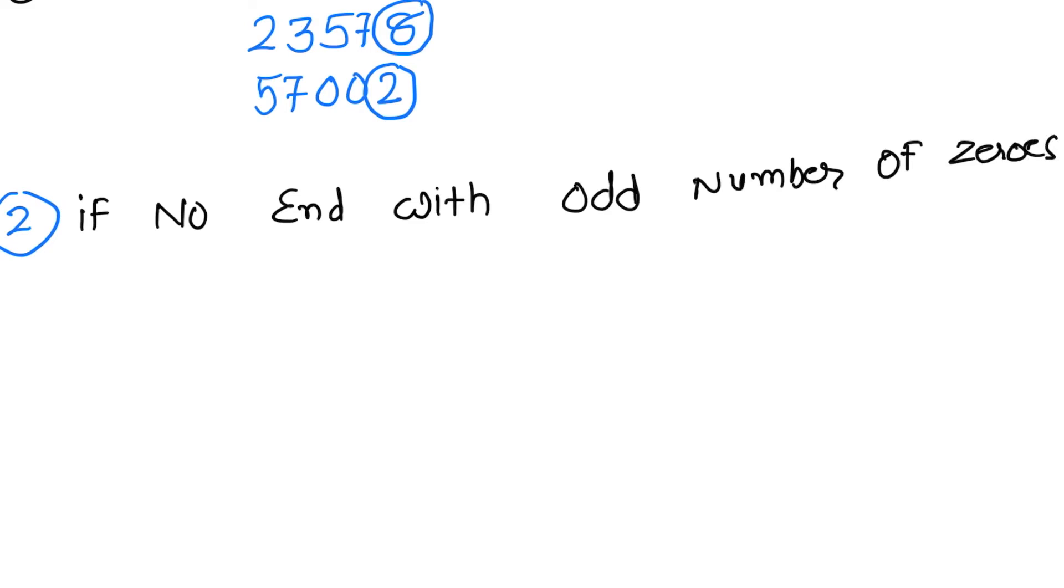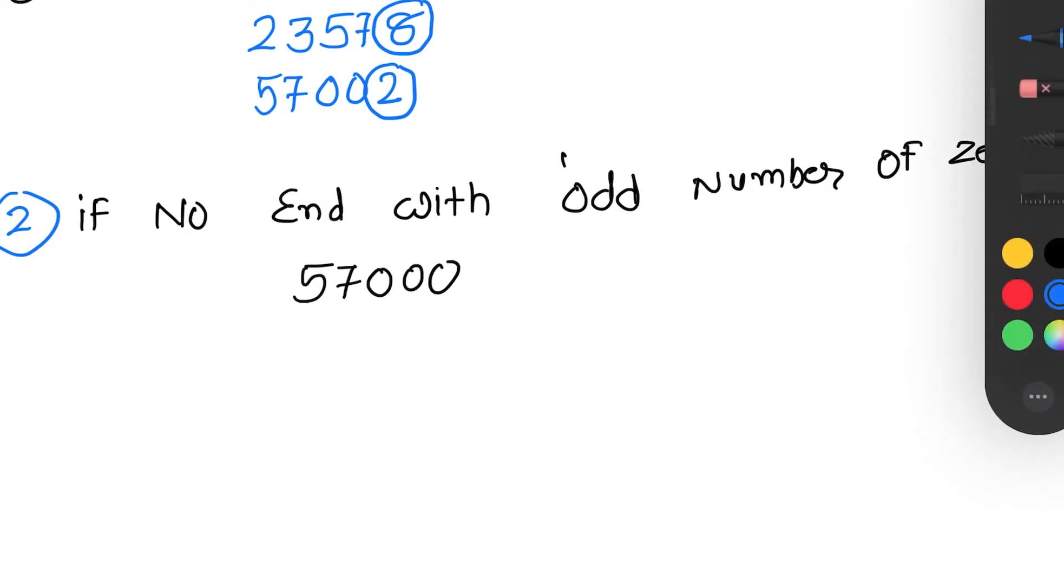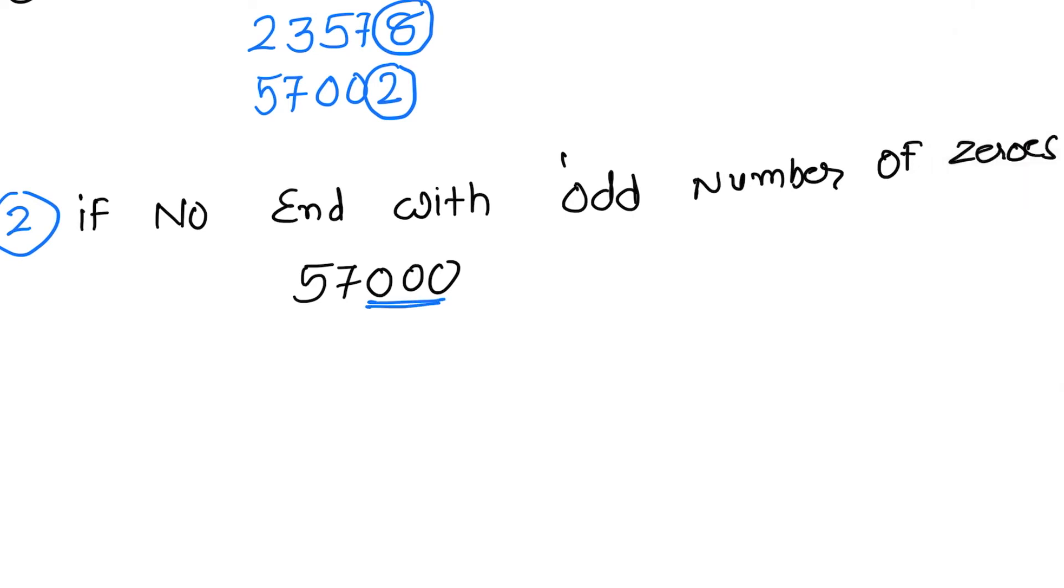Suppose I am taking one example: 57000. Here you can count that number of zeros is 3, that is odd number, so it's a non-perfect square number. Let's say 3700000. Here number of zeros is 5, that is again odd number, so this is non-perfect square.